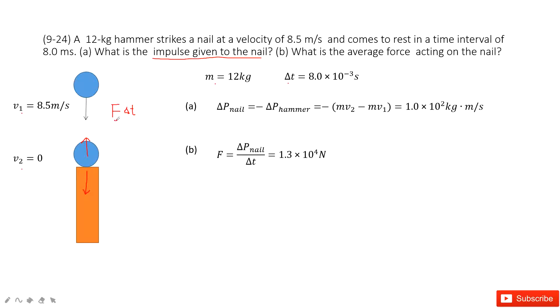So that means F times delta t is change of the momentum, is impulse. So this impulse just has the negative sign. So we can find the impulse given to the nail just equals negative impulse to the hammer. And this impulse just equals change of the momentum for the hammer.